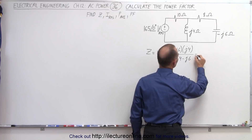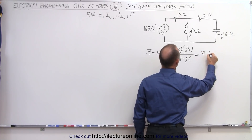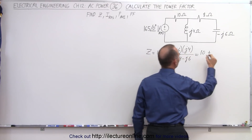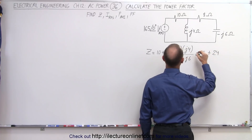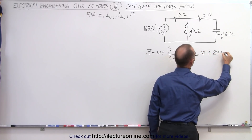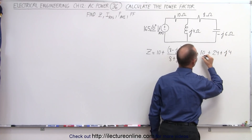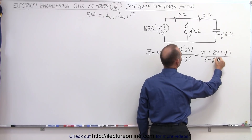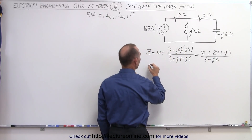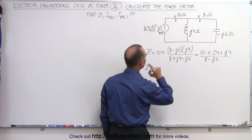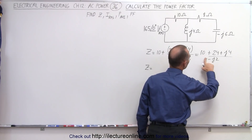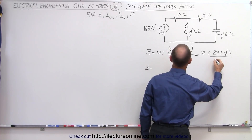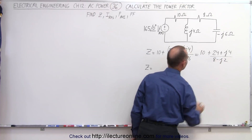Multiplying the numerator: (8 − j6)(j4) gives us j squared times negative, which is positive 24, and j4 times 8 gives us plus j32. So the numerator is 24 + j32, all divided by the denominator 8 − j2.